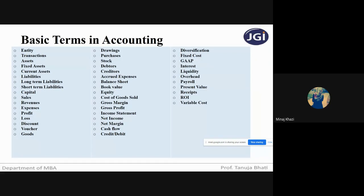Next, what is expenditure? Expenditure is the cost of operation that a company incurs in order to generate revenue. It costs money to make money — so whatever cost is incurred in order to gain the revenue, that is an expense.